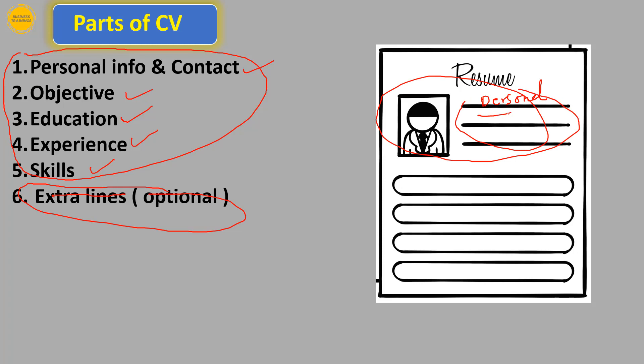In the CV: your personal information includes your address and contact number; then your objective; then your education; then your experience; and finally your skills. So a CV has five parts — personal information, objective, education, experience, and skills.